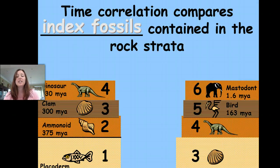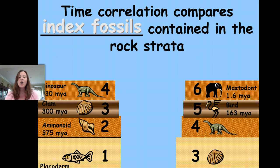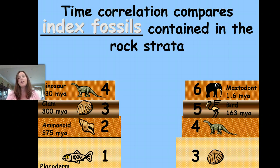Time correlation compares index fossils contained in the rock strata. Looking at these two diagrams, both have fossils in them. We're going to compare the layers and the actual fossils in them, which will help us determine the age of the rock layer and to know which one may have been deposited first and is therefore older than the other.